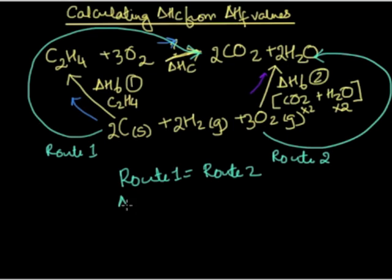In route 1, we have delta HF1 which represents the enthalpy change for ethene, and then we add the enthalpy change of combustion which is our unknown value, and this is equal to...